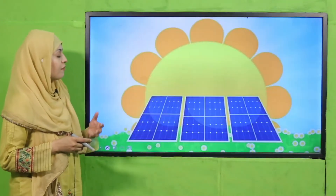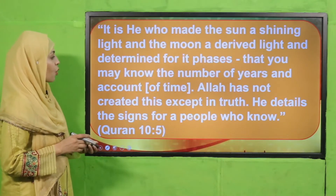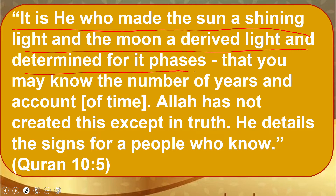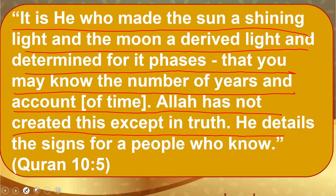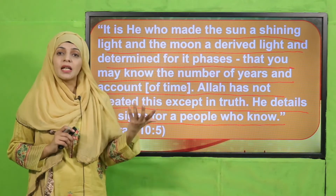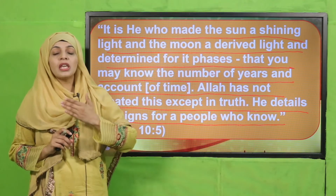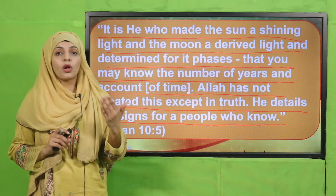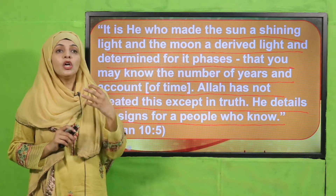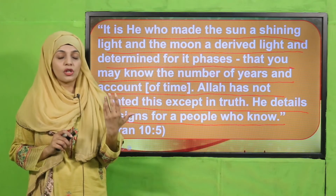From an Islamic perspective, Allah says in the Quran: 'It is He who made the sun a shining light and the moon a derived light, and determined its phases that you may know the number of years and account of time. Allah has not created this except in truth.' Allah has created light for us so we can see, and the coming and going of sunlight helps us count our days, months, and time. The moon's different phases also change because of light.